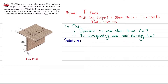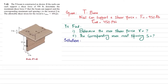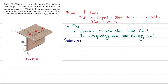Welcome back. Problem 7-42. The T-beam is constructed as shown. If the nails can each support a shear force of 950 pounds, determine the maximum shear force V that the beam supports and the corresponding maximum nail spacing to the nearest 1/8 inch. The allowable shearing stress for wood is 450 psi. We have to find the maximum shear force that can be applied on this beam and the nail spacing.